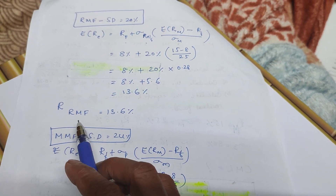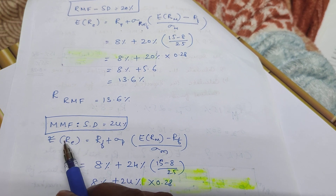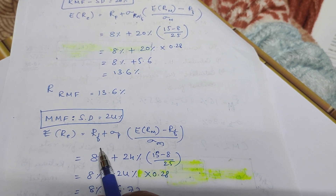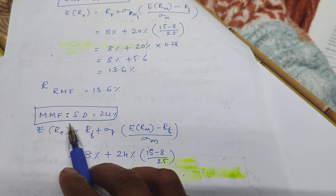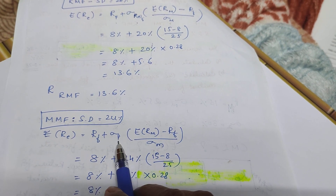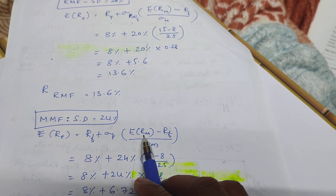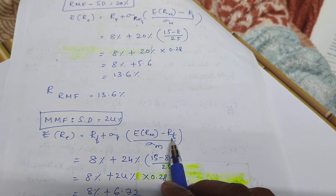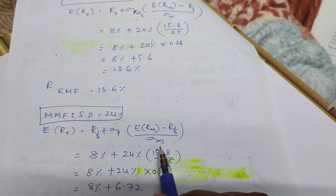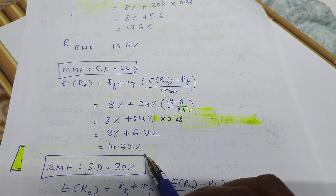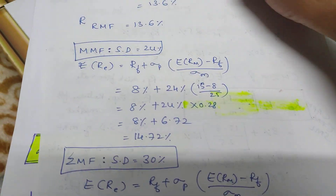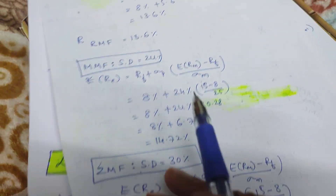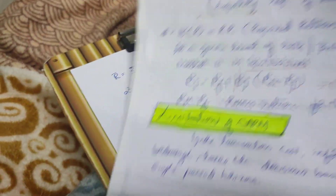For the third mutual fund, the standard deviation is 24%. Applying the same CML formula: 8% plus 0.28 into 24%, that comes to 14.72%. The last one gives 16.4%. These are the individual expected returns for each mutual fund using the capital market line.